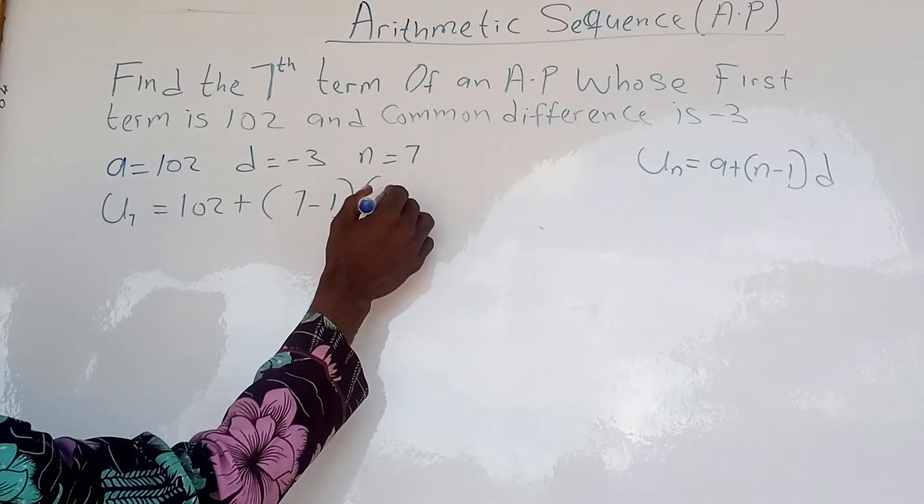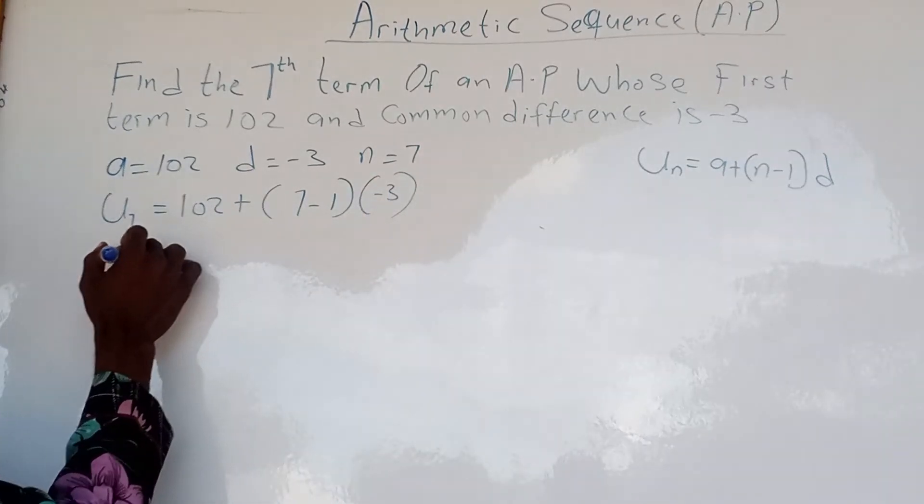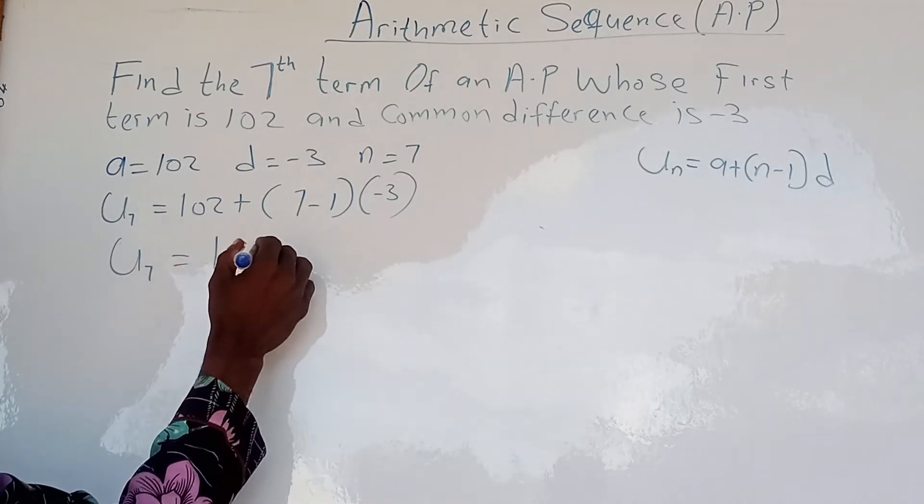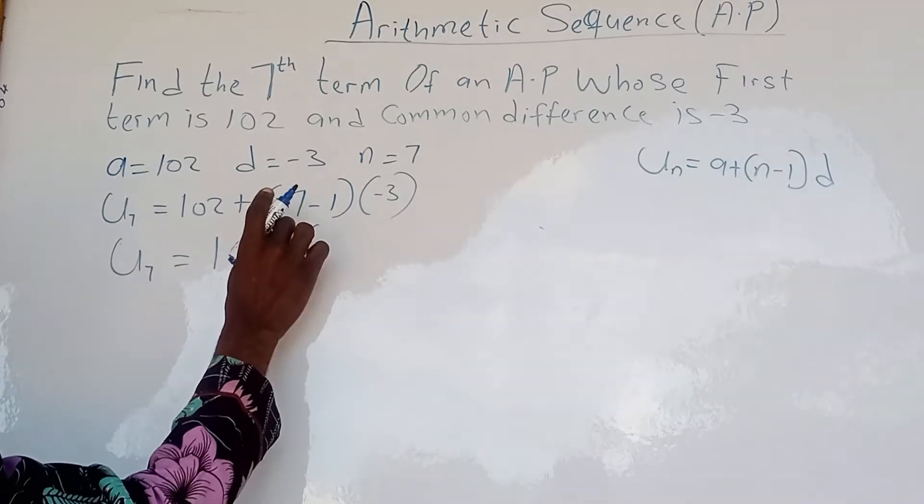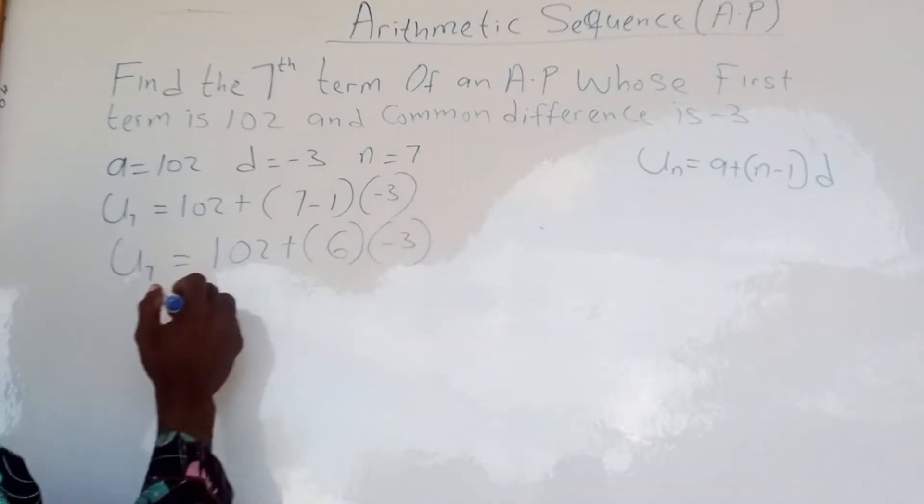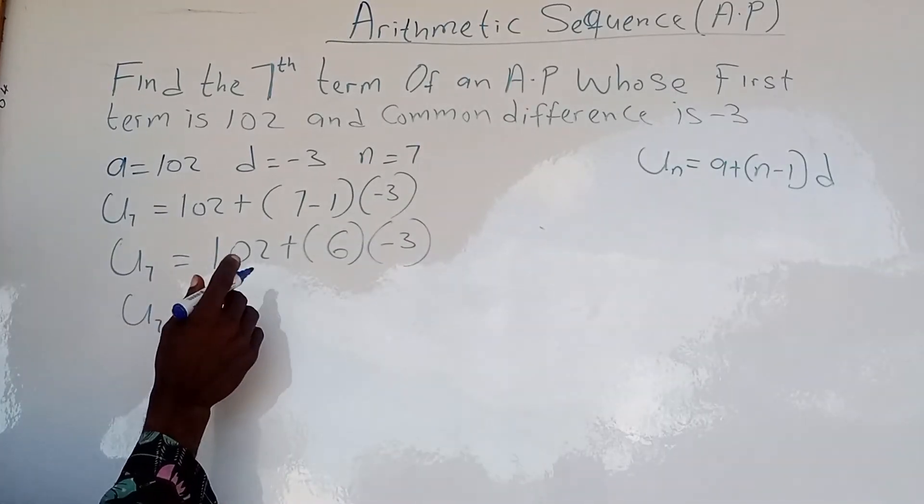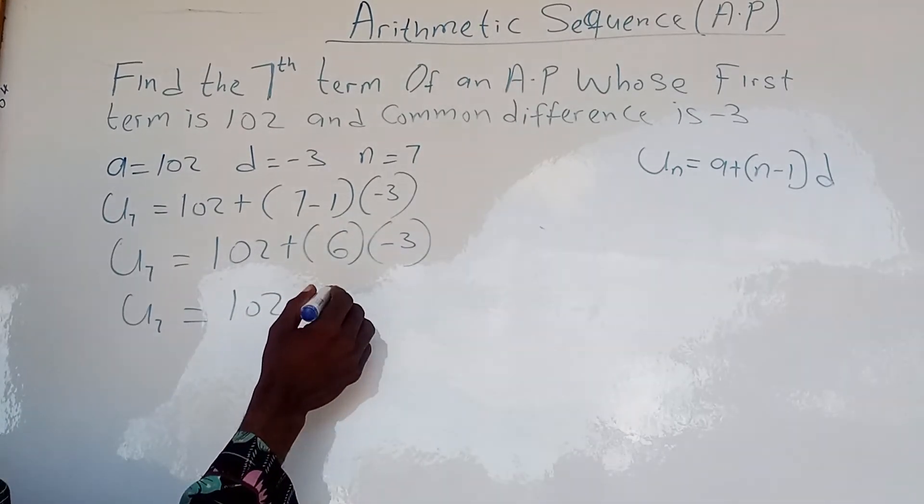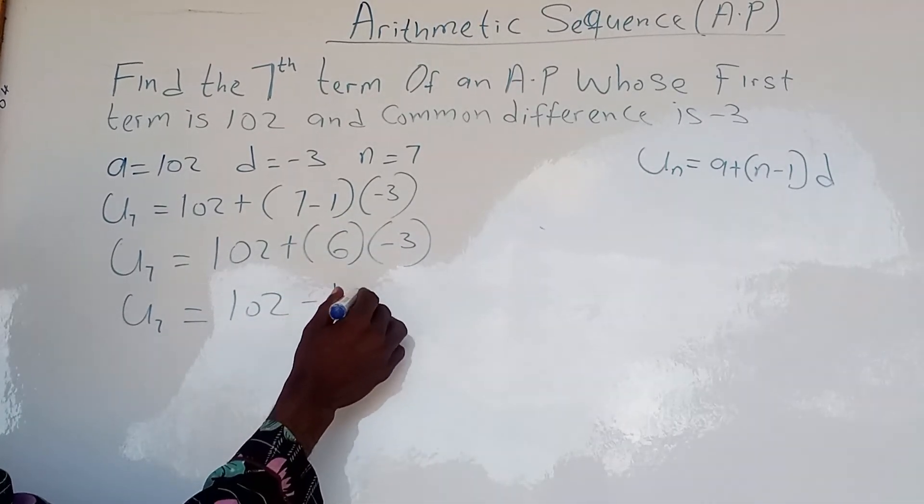So we have U₇ equal to 102 plus 6 minus 3. Now this one multiplied by this equals minus 18.